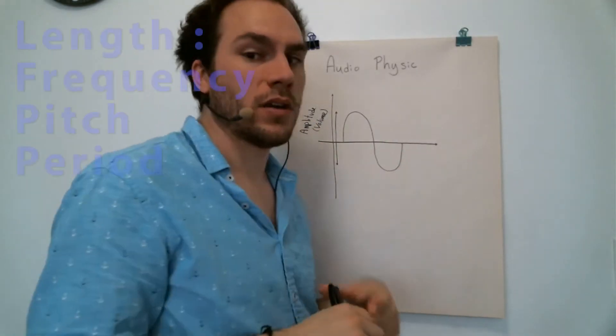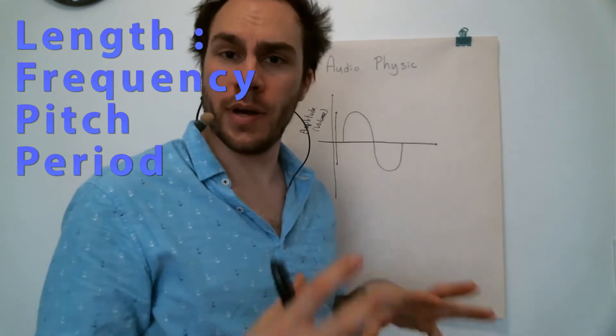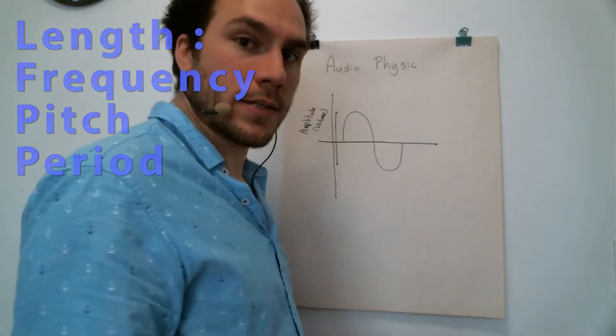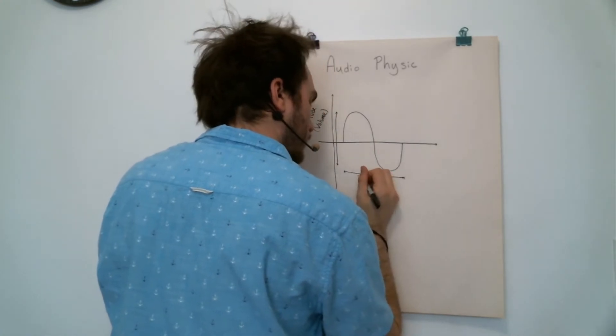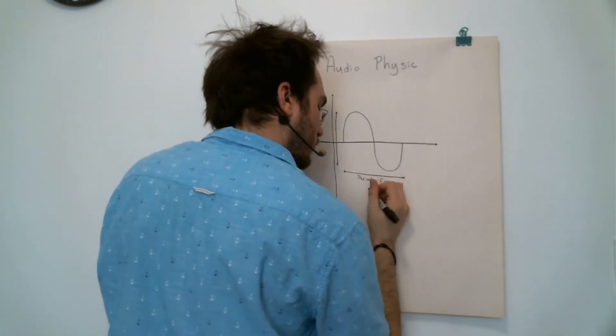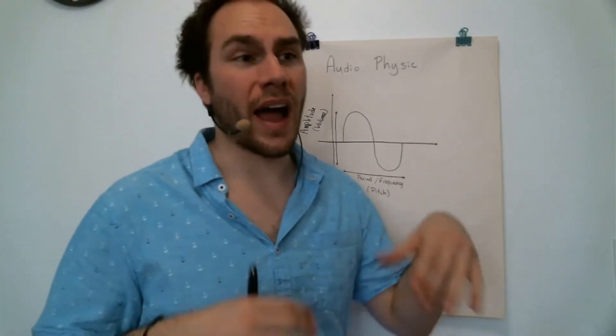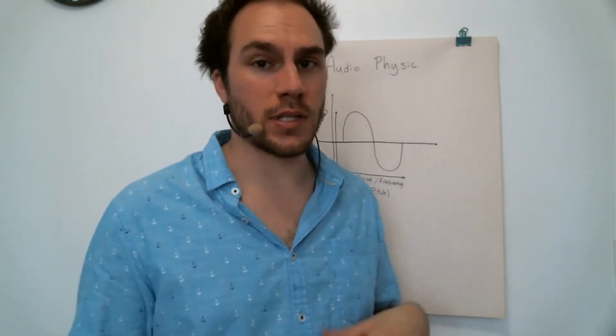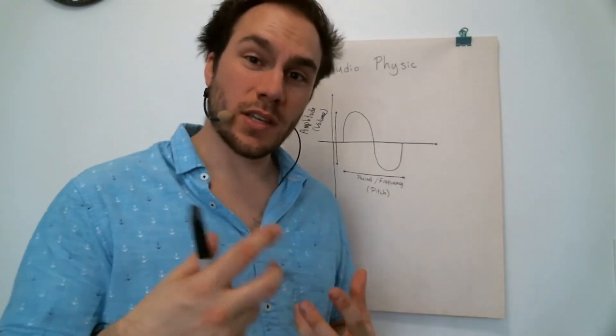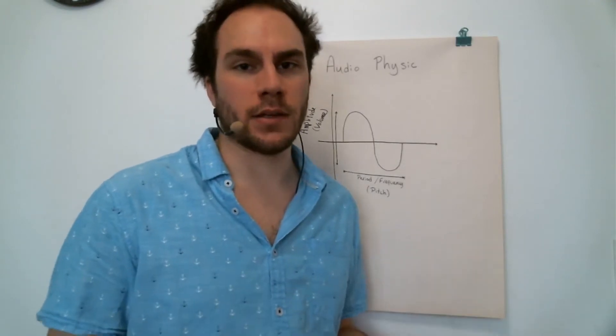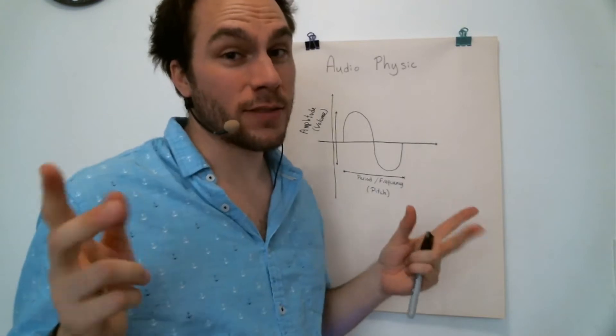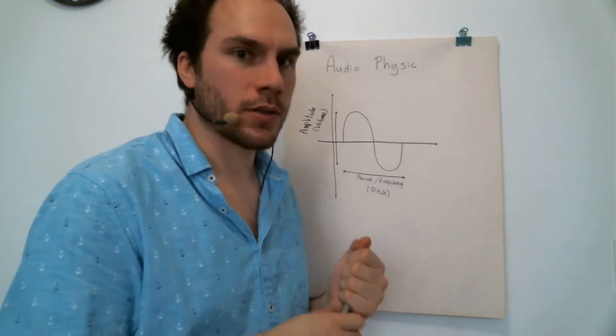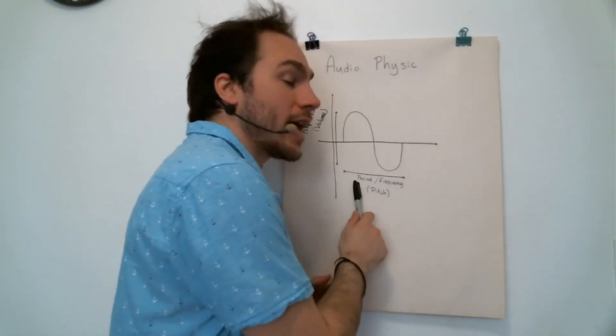The length of the wave is also known as the pitch. The higher the pitch, the higher the frequency is. A 20 Hertz frequency will execute 20 cycles per second, and a 20 kilohertz frequency will execute 20,000 cycles per second. That's why we refer to it as the period.